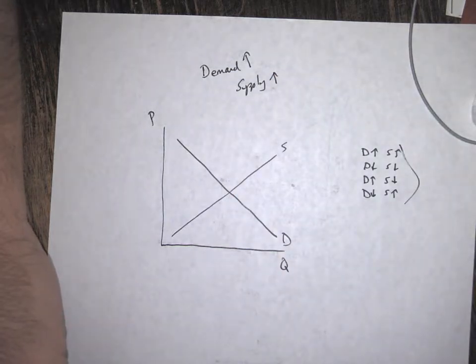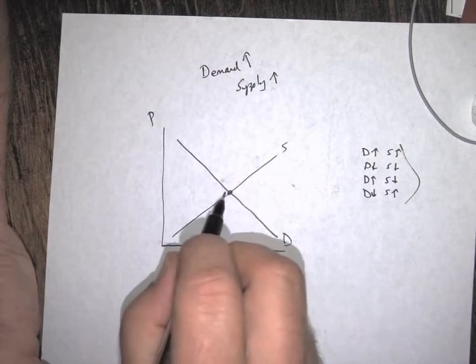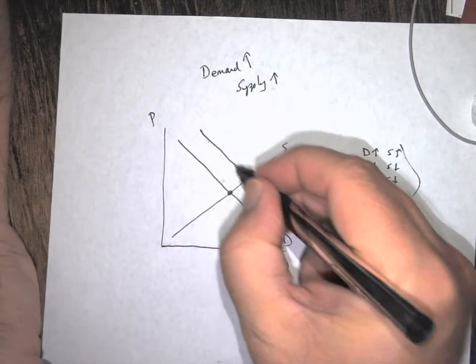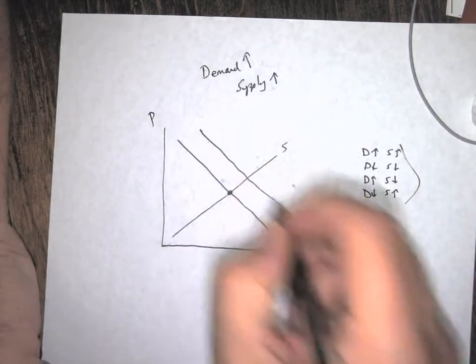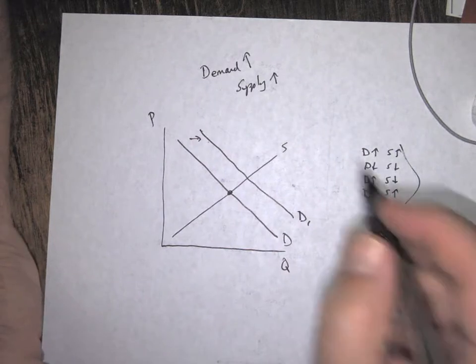the equilibrium price and quantity of the good. Okay, the equilibrium part is scaring some people off. Remember that's just where they cross. Okay, so we have demand increase, remember always shift to the right, and then we have supply